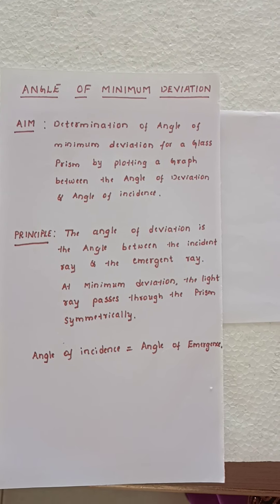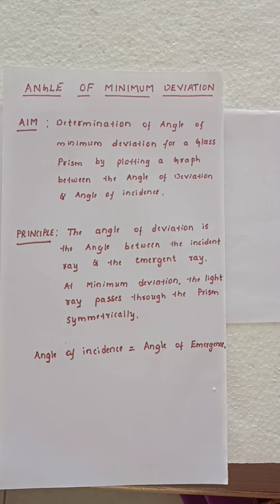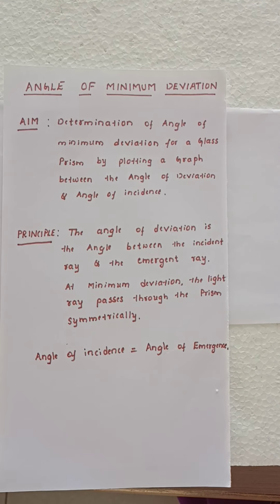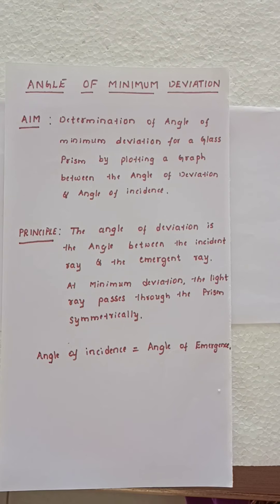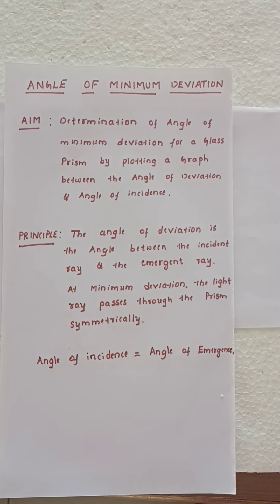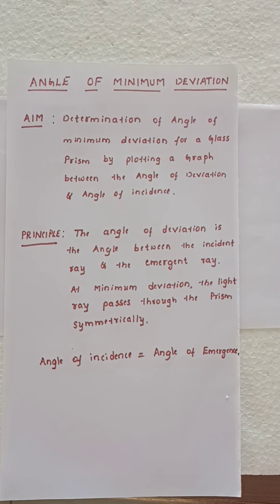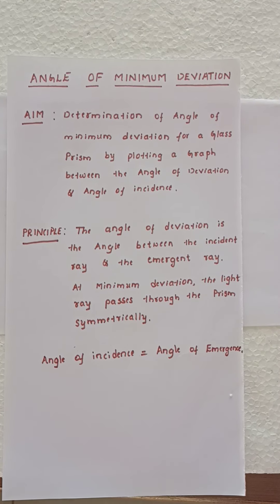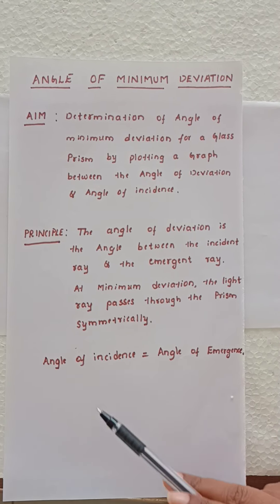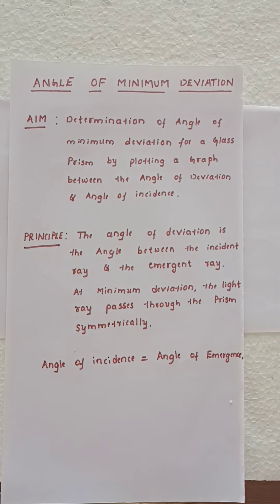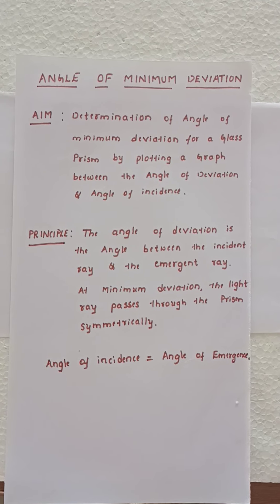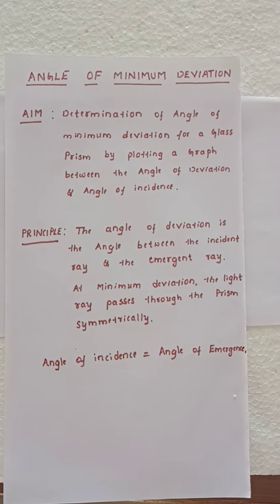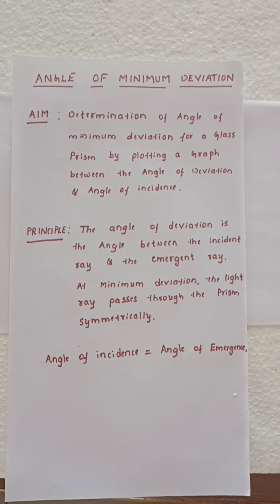Let us see the principle of the experiment. The angle of deviation is the angle between the incident ray and the emergent ray. You have studied this in the theory. At minimum deviation, the light ray passes through the prism symmetrically. Therefore, in the principle, we write: angle of incidence is always equal to angle of emergence.